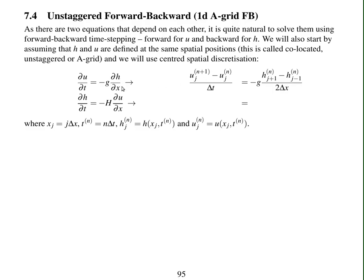And then dh by dx, using centred spatial discretisation, is hj plus 1 minus hj minus 1, all over 2 delta x. Because the whole equation is representing at time level n, this gradient is at time level n.